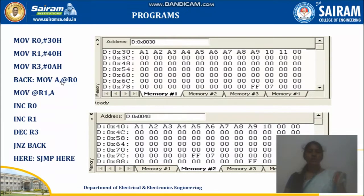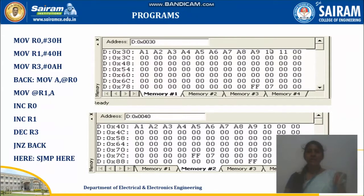When the controller executes MOV A, @R0, R0 holds 30, so at the 30th location the data A1 is available and will be moved into the accumulator. Then MOV @R1, A — the content of accumulator is A1 — so A1 is moved to the location pointed by R1, which is 40. Before execution, this is the initial status. Once the program executes, the data from the 30th memory location will be moved to the 40th location.